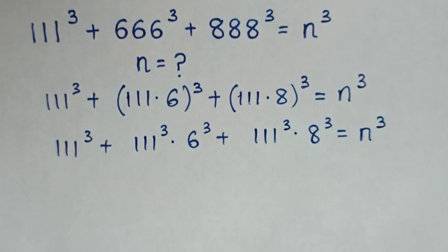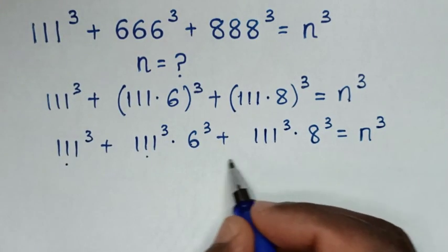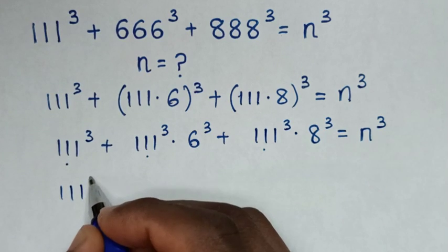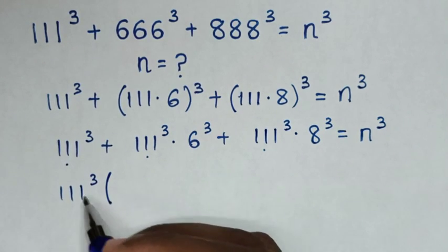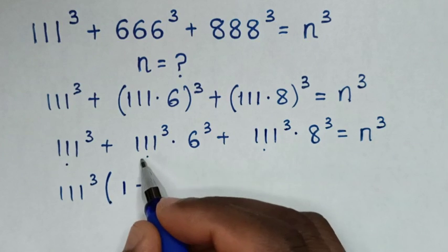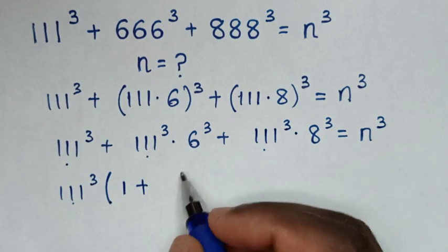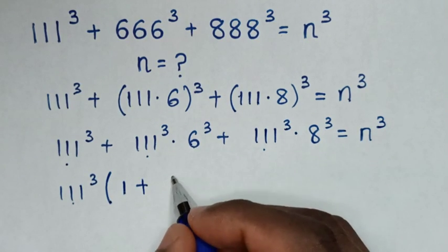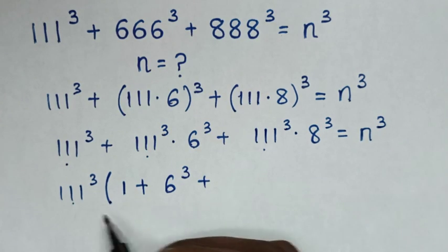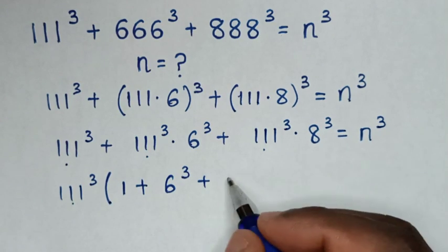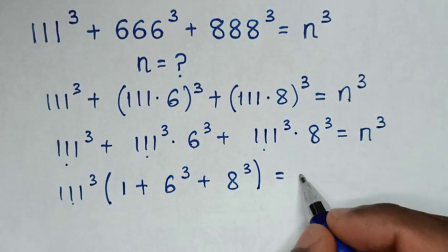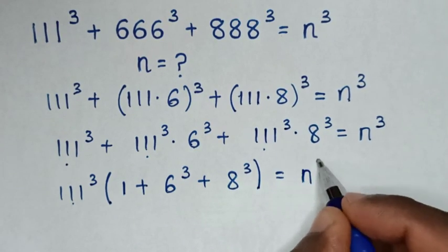Then in the next step, 111 power of 3 is common, so we take 111 power of 3 out of the bracket. This gives us 111 power of 3 times the bracket 1 plus 6 power of 3 plus 8 power of 3, is equal to n power of 3.